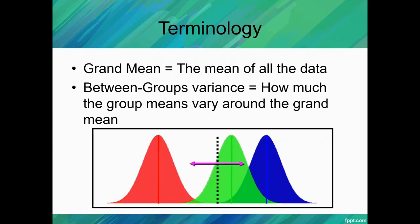The grand mean is the mean of all of the data. So this would be the average of all of the data combined. So we have our mean for this group, the red group, we have our mean for the green group, and we have our mean for the blue group. But this dotted line here would be the grand mean.